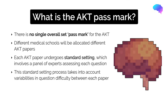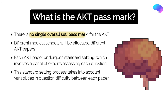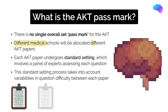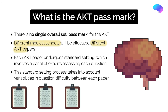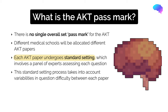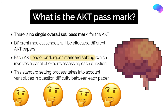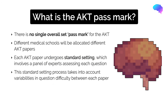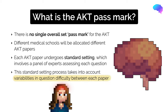You may be wondering what the AKT pass mark is — how many questions do you have to get right to pass? Well, there's no single overall set pass mark for the AKT. It's not as simple as saying if you get 50 questions correct, you've passed. Remember, different medical schools will be allocated different AKT papers, and those papers will have different types of questions, although they'll all broadly cover the same content. Each AKT paper undergoes a process called standard setting, which involves a panel of experts assessing each question, taking into account the variability in question difficulty between papers.